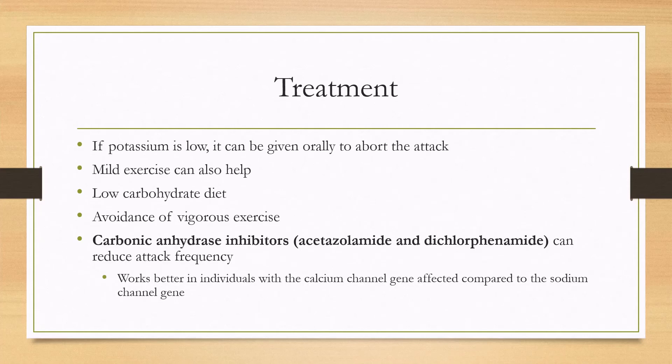For treatment, if potassium is low during an attack it can be given orally to abort it, and mild exercise can also help. To reduce the frequency of attacks, a low-carbohydrate diet and avoidance of vigorous exercise are recommended. First-line medication treatment can include carbonic anhydrase inhibitors such as acetazolamide and dichlorphenamide, which can help reduce attack frequency.